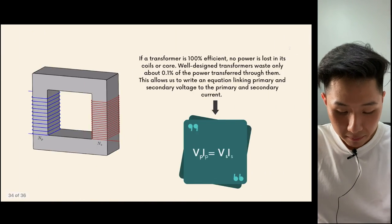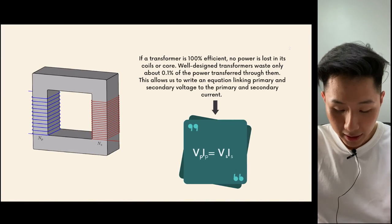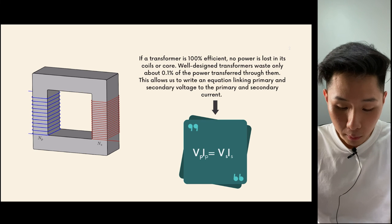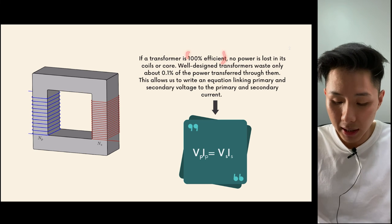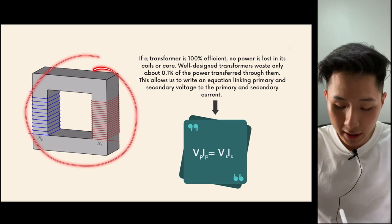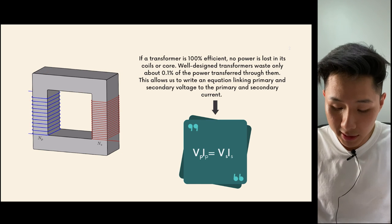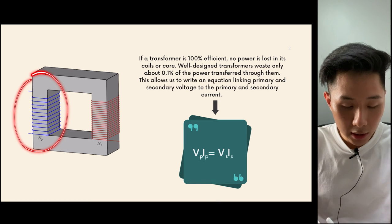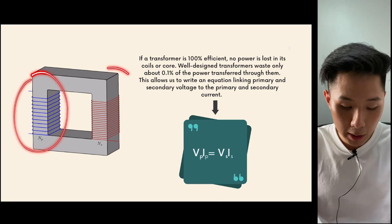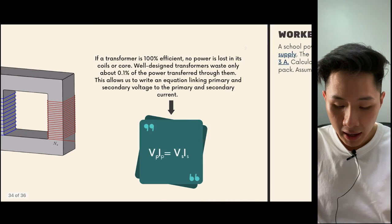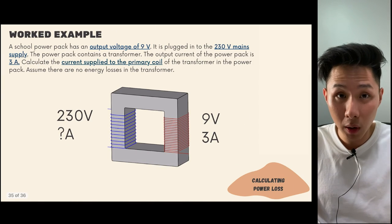A well-designed transformer is usually nearly 100% efficient — very little power is lost (around 0.1%). This allows us to write the formula Vp × Ip = Vs × Is, meaning the power input equals the power output, because there is very little power loss. This formula allows us to solve many other questions.